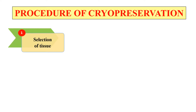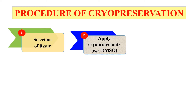What is the procedure of cryopreservation? First, we select the tissue — the tissue which we want to preserve. Then after selection, we treat the selected tissue with some cryoprotectant. Why? Because when we preserve our tissue at ultra-low temperature, there will be the formation of ice crystals which may damage the tissue or cells. To prevent the formation of these ice crystals, we use cryoprotectants like DMSO — dimethyl sulfoxide — which prevents the formation of ice crystals and protects the cryopreservation.